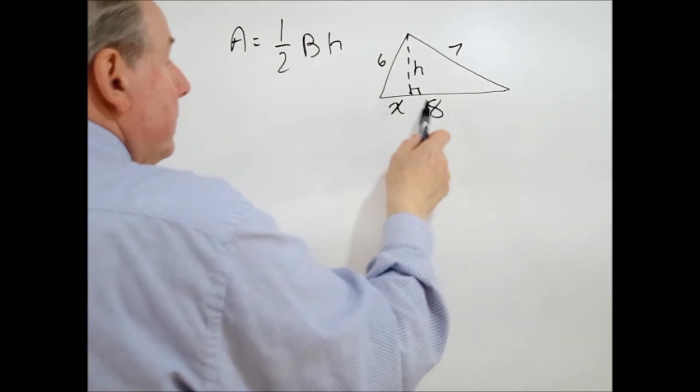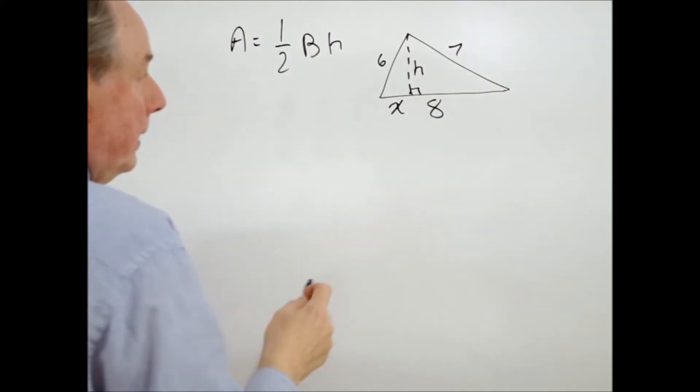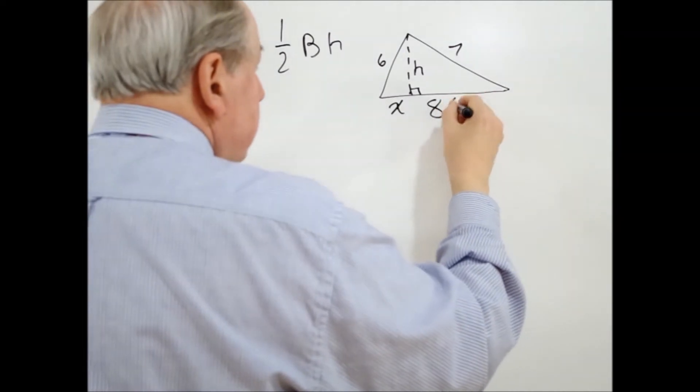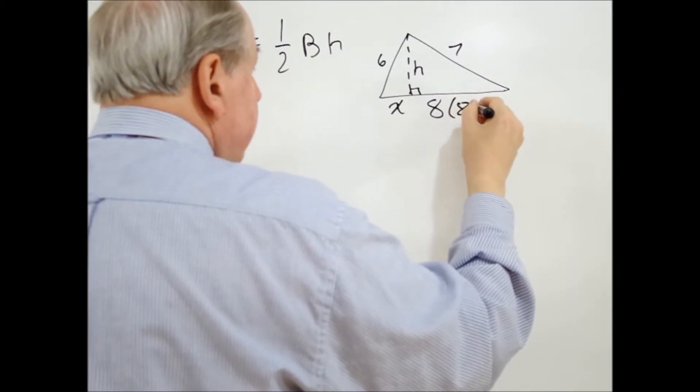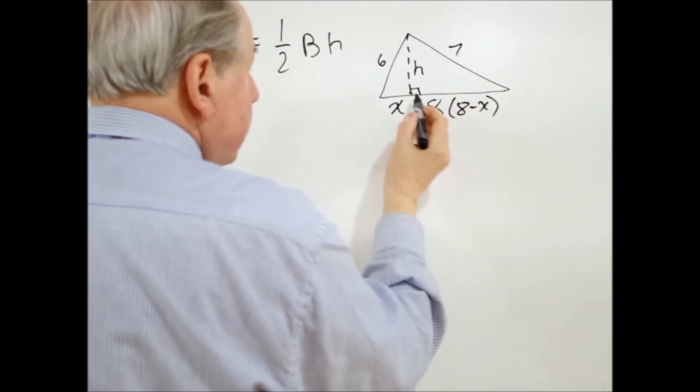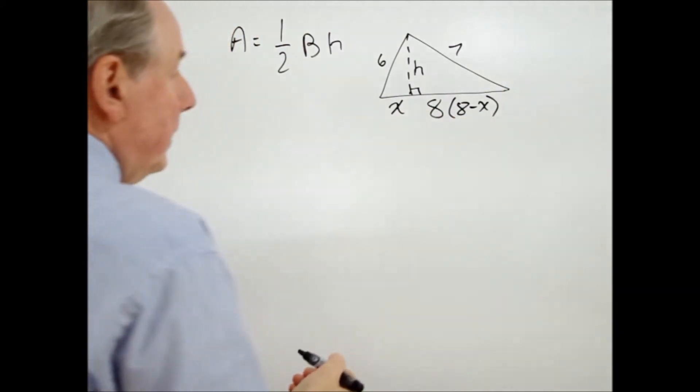Now it's going to be less than eight by the amount of X. So we can now say that it is eight minus X. That's what this distance is from there to there.